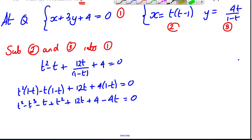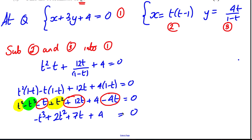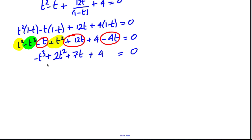Collecting like terms: we have two t squareds, one negative t cubed, and for the t terms: negative t minus 4t plus 12t gives plus 7t, and plus 4. So we get negative t cubed plus 2t squared plus 7t plus 4 equals 0. Multiplying everything by negative 1 gives t cubed minus 2t squared minus 7t minus 4 equals 0.